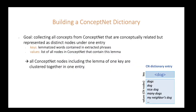For the next step, we first create a dictionary based on ConceptNet, where under one entry we collect all concepts that are conceptually related but represented as distinct nodes in ConceptNet. In our dictionary, keys are lemmatized words contained in the extracted phrases, and the values are a list of all nodes in ConceptNet that contain this lemma. Therefore, all ConceptNet nodes including the lemma of one key are clustered together under one entry.